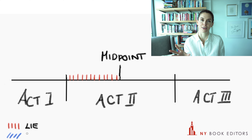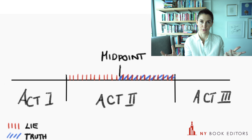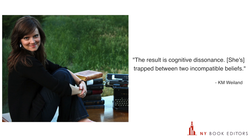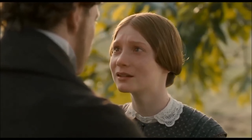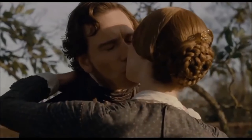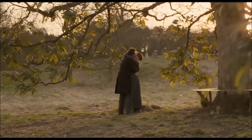The important thing to remember about the second half of act two is that the character holds two conflicting beliefs, sometimes conflicting at the same time. They believe their lie still, and now they also believe their truth. K.M. Weiland says the result is cognitive dissonance. She's trapped between two incompatible beliefs, even when it seems like she's gotten everything she ever wanted — the love of this man she loves, and he's asked her to marry him — yet something is amiss. There's great joy and great happiness, but there are also all these strange signs.